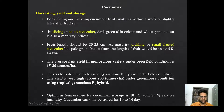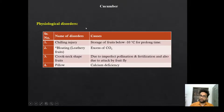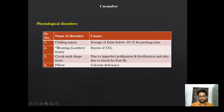Please remember gynoecious F1 hybrid yield figures. Storage temperature for cucumber fruit is 10 degrees Celsius. Physiological disorders: chilling injury is due to low temperature storage. Bloating means leathery fruit, due to excess CO2. Crooked neck-shaped fruit is due to imperfect pollination and fertilization and also due to attack by fruit fly. Hollow or pitted fruit is caused due to calcium deficiency.